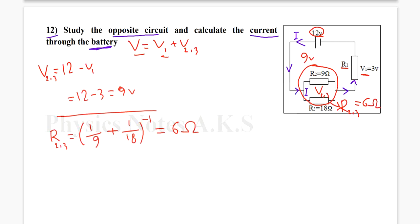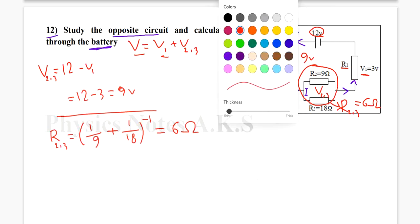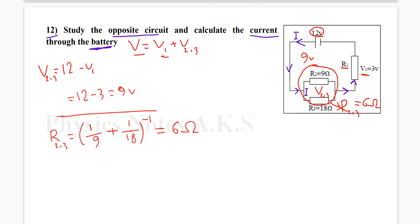So now in the parallel combination I have the voltage and the resistance. I can find that current. So I is going to be V over R. What is the V? It is V23. And what's the R? It's R23, the total. So it's going to be 9 over 6.